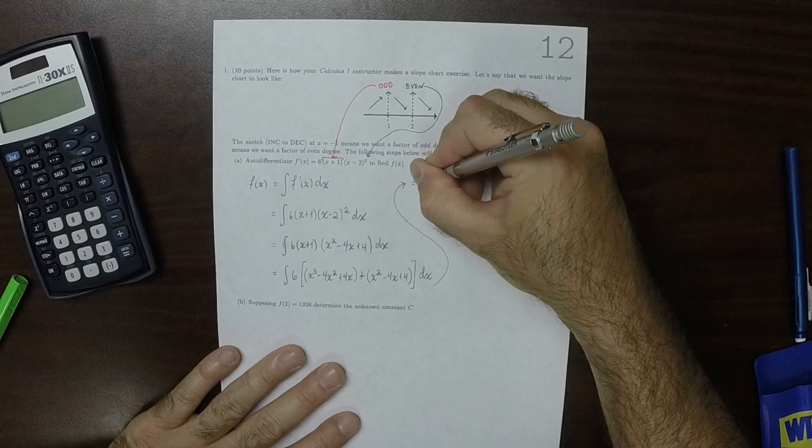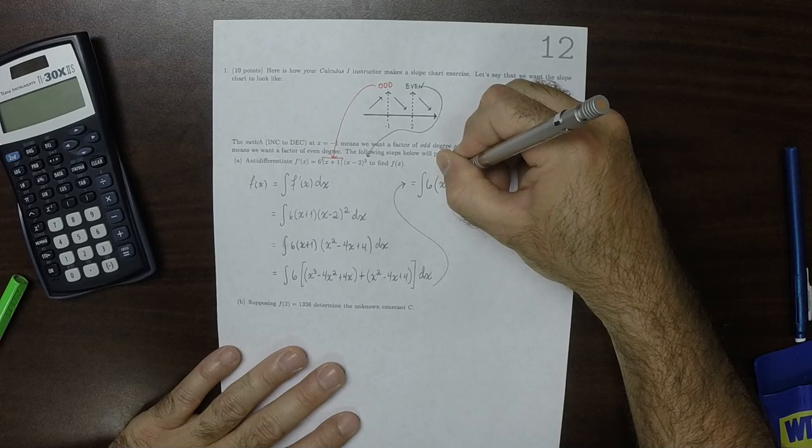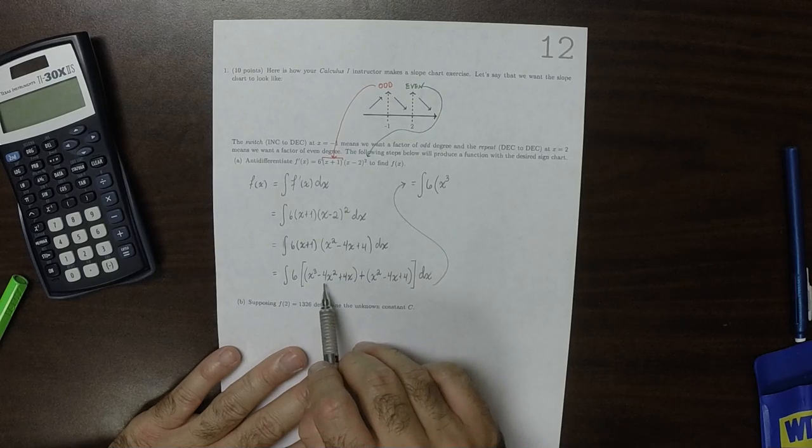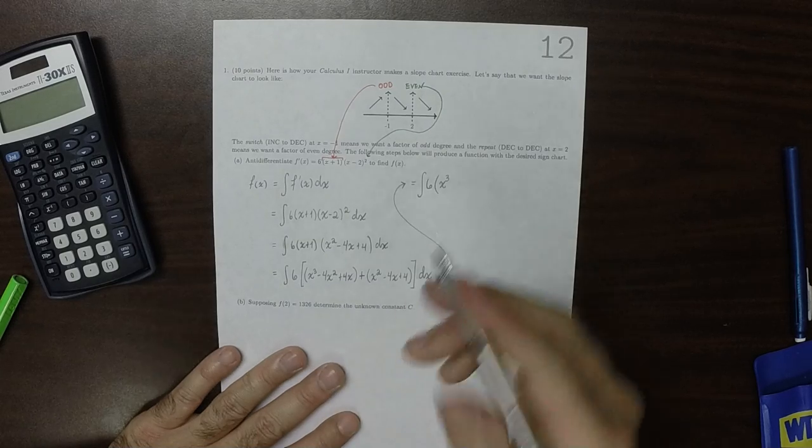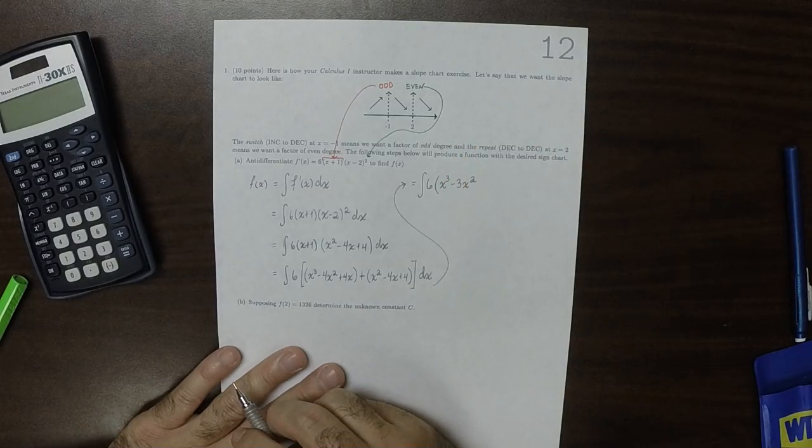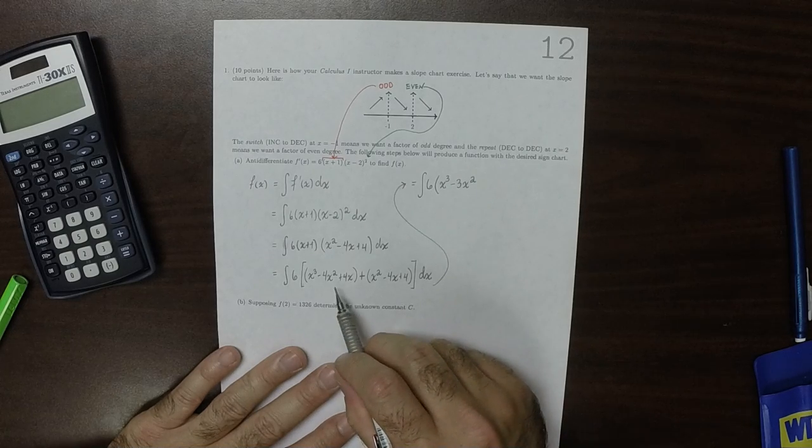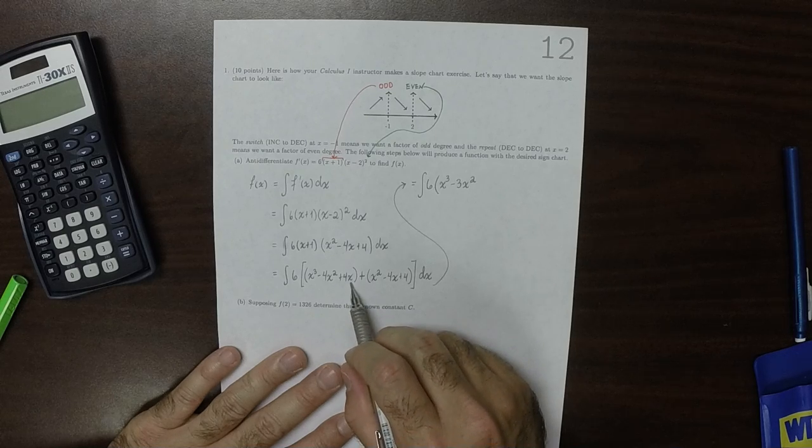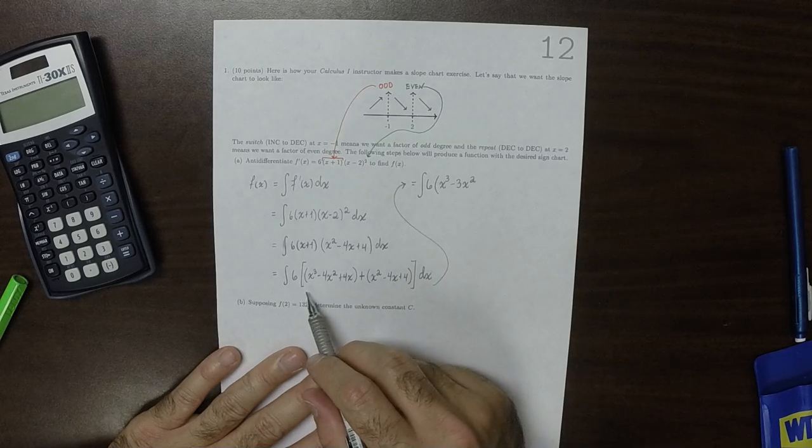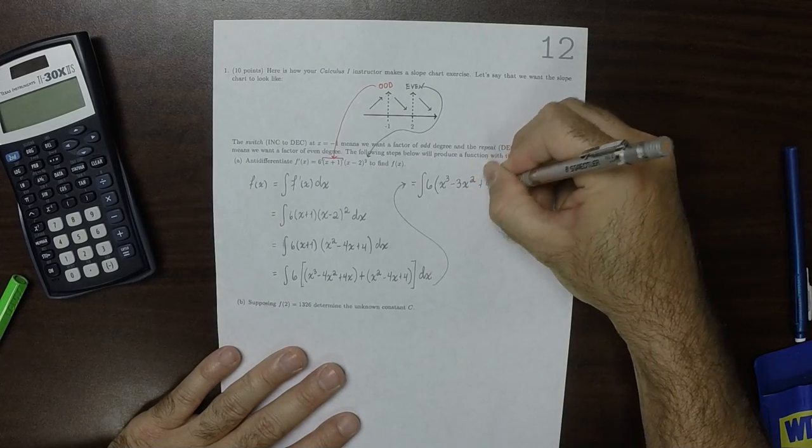and then plus 4x, and then plus x squared minus 4x plus 4 dx, which is the anti-derivative of 6. And now I'm going to collect like terms. So that would be 1x cubed, and then now let's collect the squares. So negative 4x squared and then plus 1x squared is negative 3x squared. And then let's collect the x's. So 4x plus negative 4x, so there's no x's. And then let's collect the units, so then there's just 4. So plus 4 dx.